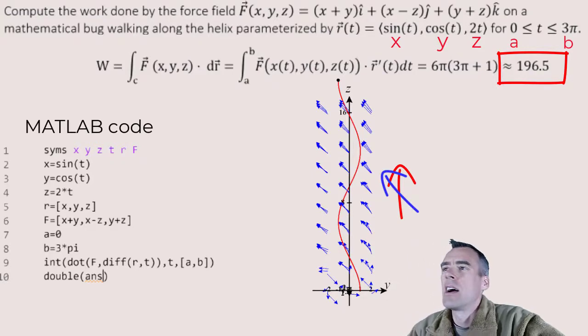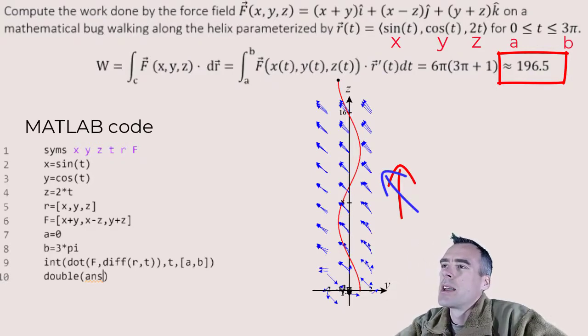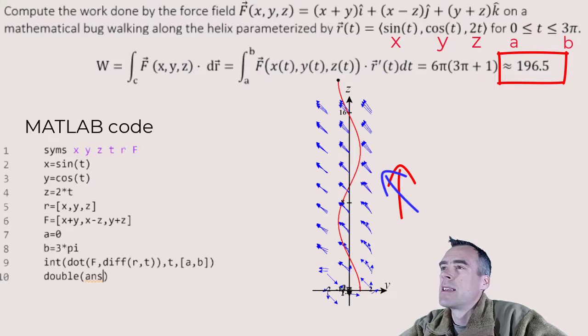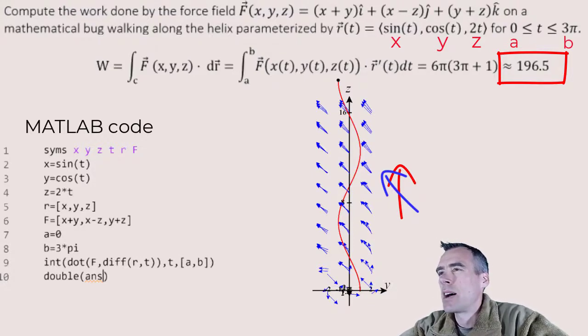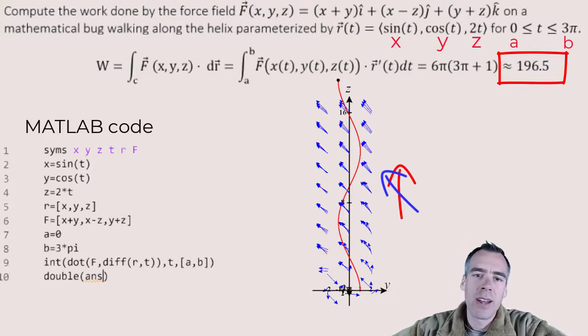And see, our bug is traveling upward. And you can see our force field vectors are also generally heading upward. So the fact that our bug is moving in the same direction as our force field gives us good reason to believe that the work in this case is indeed going to be positive, like that positive 196.5 value that we found. So that checks out. And we're done.